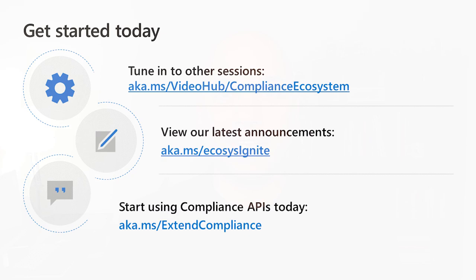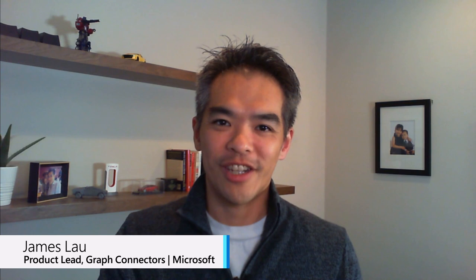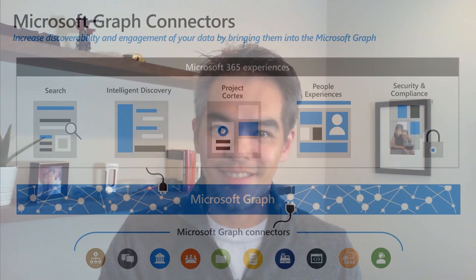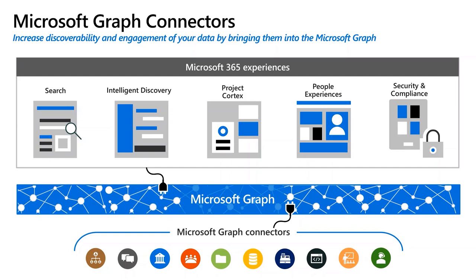Thanks, Hamad. Hey everyone, my name is James Lau, and I'm the product lead for Graph Connectors. Graph Connectors are apps that you can build to bring any external data into the Microsoft Graph. You can develop a connector for your own organization, bringing in data that users care about, or if you're building a product for customers who also use Microsoft 365, you can bring content from your product into Microsoft Graph through Connectors. By bringing in external content through Connectors, you can have them deeply integrated into M365 experiences to increase discoverability and user engagement with that content.